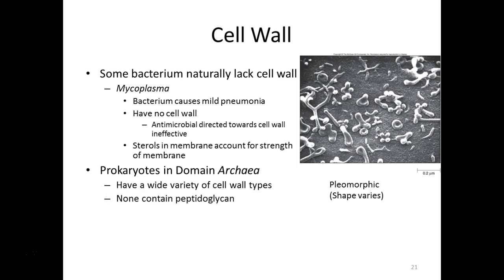There's a whole genus of bacteria that don't actually have a cell wall. Because the cell wall helps hold a particular shape, these cells are referred to as pleomorphic. This is Mycoplasma pneumoniae, which causes a very mild form of pneumonia commonly called walking pneumonia — people are up walking around and don't realize how sick they are. One of my friends in undergrad had walking pneumonia and passed out at the top of a stairwell because she couldn't breathe.